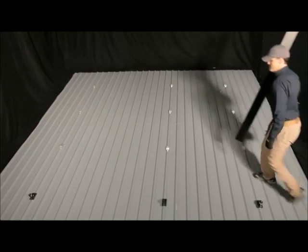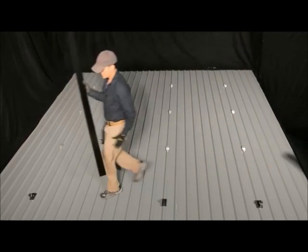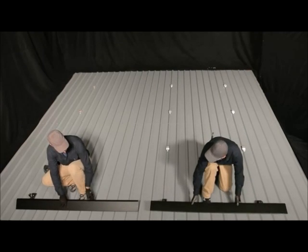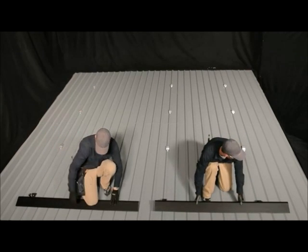Next, carry the array skirt sections to the roof. Place the first section of array skirt on the key side of the front row leveling feet, adjust for the correct cantilever, and rotate it into place.